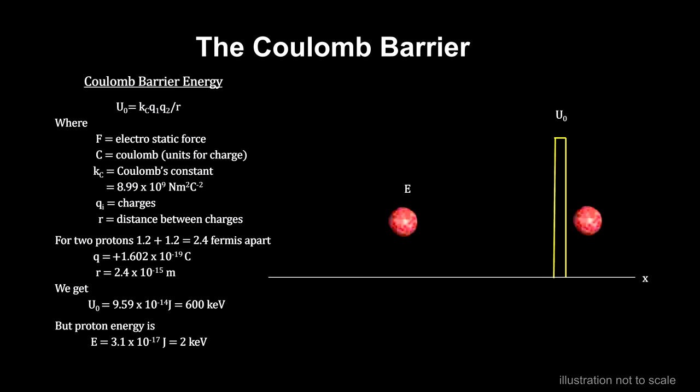If we look at it from a classical energy point of view, we see that proton average energy at 15 million Kelvin is just not enough to overcome the potential energy barrier. In fact, the energy required to overcome the barrier is 300 times greater than the average energy of the protons.